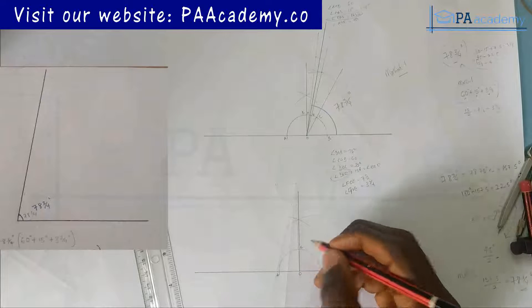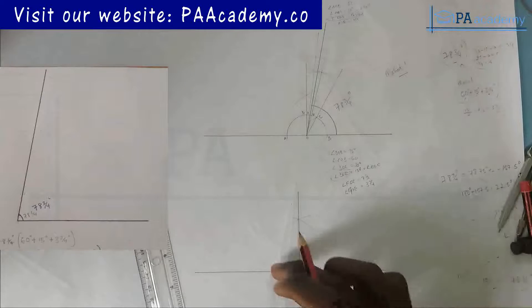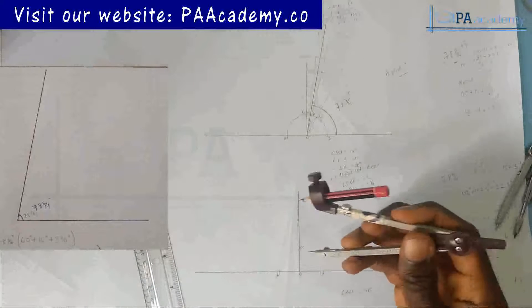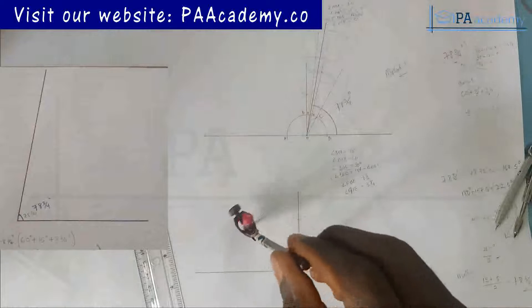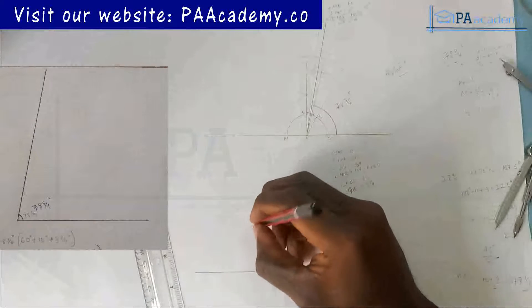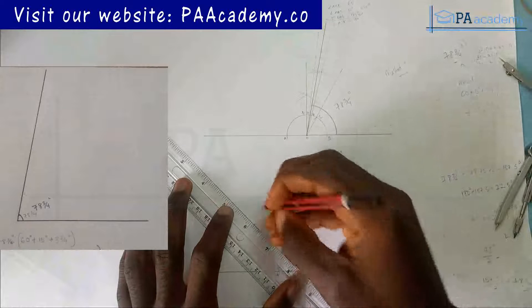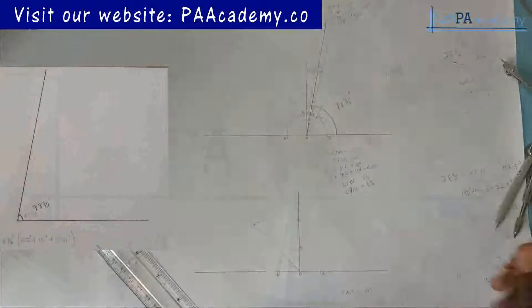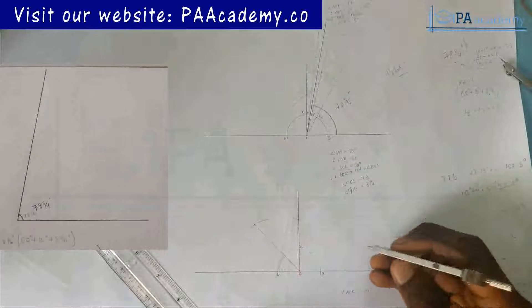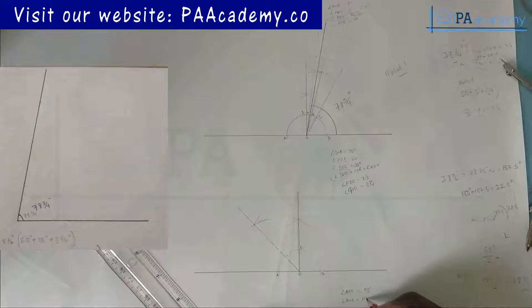Now let's bisect angle AOC to get 45 degrees. From point C draw an arc; with the same length come to point A and draw another arc. From the point of intersection, draw a line. This divides angle AOC into 45 degrees each. I'll call the midpoint D, so angle AOD = angle DOC = 45 degrees.